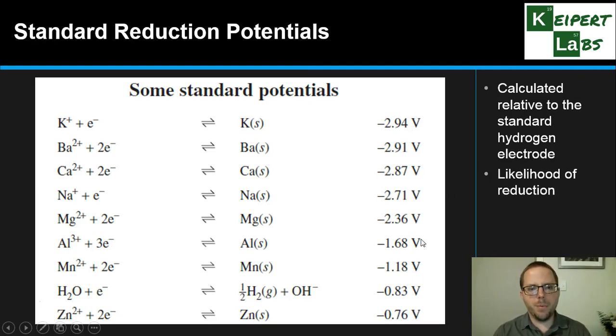They also give us an indication of the likelihood of reduction. The more positive the number is, the more likely it is to reduce and the less likely it is to oxidize, and vice versa. These are the numbers that we're going to be working with in this video to help us make calculations of cell voltage.